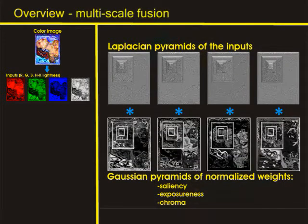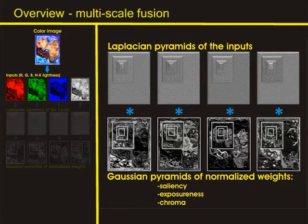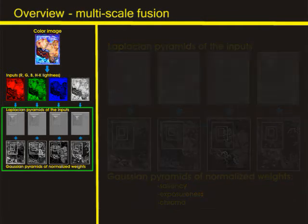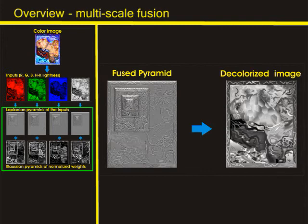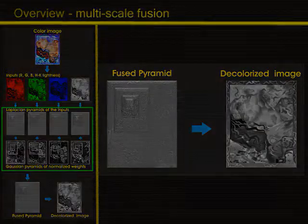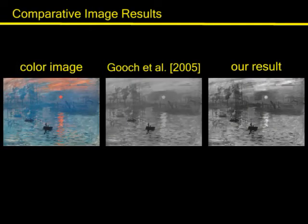To minimize artifacts that can be introduced by these weight maps, our approach is designed in a multi-scale fashion, by using a Laplacian pyramid of the inputs combined with Gaussian pyramids of the normalized weights. The final gray image is obtained by summing up the fused contributions of all the inputs. Our method is fast, and despite its simplicity, in many cases it outperforms more complex and computationally expensive techniques.